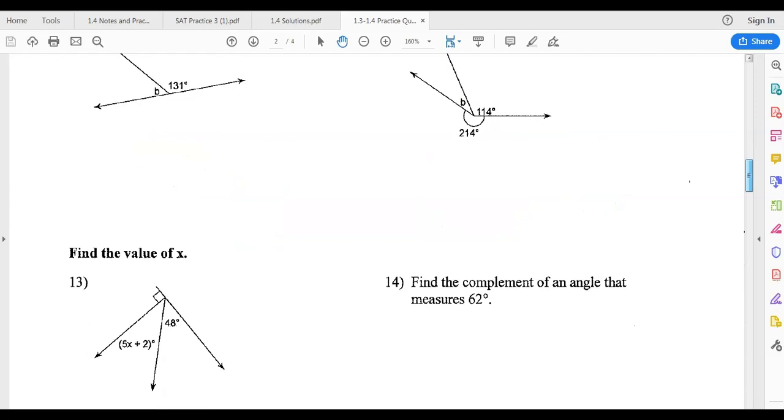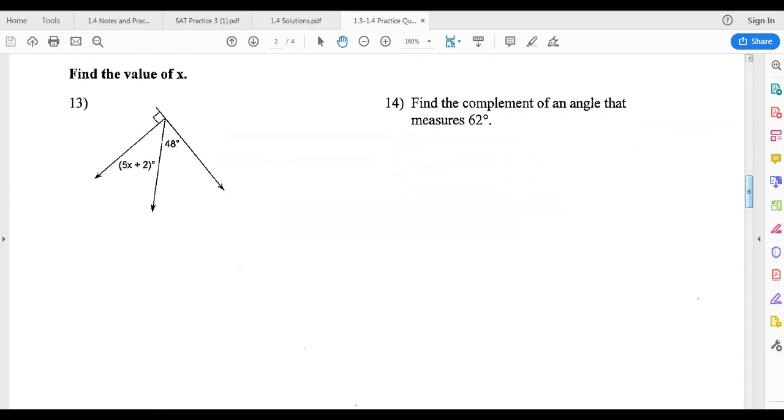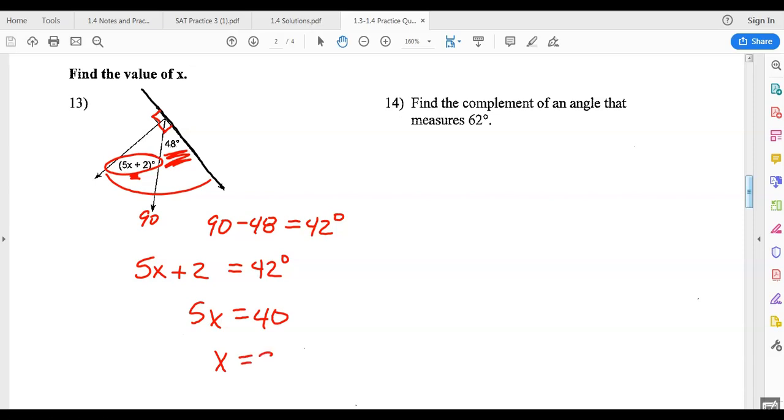Alright, now we move into some algebra. Going down here, so we got number 13, find the value of X. So I kind of look at my diagram, and I see a straight line. But I see this side is 90, which then tells me to add up to 180. These two have to add up to 90. So it looks like we got 90 degrees here. And if this side is 48, I can figure out this side. I can do 90, take away 48, which is 42 degrees. So this expression, I need to find the X that makes it work out so that it's 42 degrees. And I'm going to subtract 2 from both sides. And I'm going to get 40. And I'm going to divide both sides by 5. And I'm going to get X equals 8. And that's what they wanted, find the value of X.